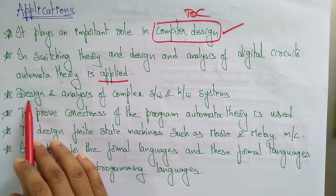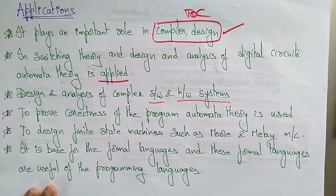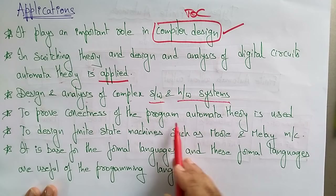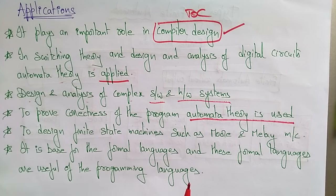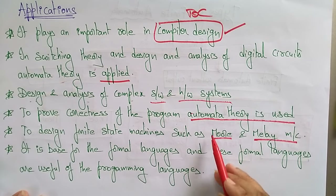Automata theory is very helpful in the design and analysis of complex software and hardware systems. We also use theory of computation concepts for designing complex software and hardware systems. To prove the correctness of a program, automata theory is used — to verify whether a program is executing correctly, accepting the correct inputs, and giving the correct output.